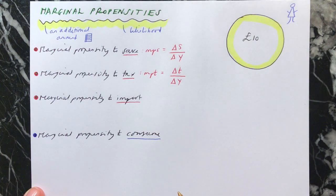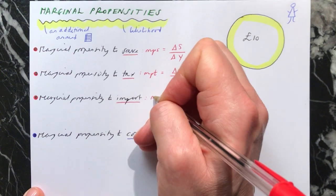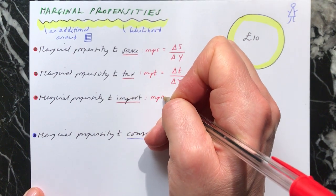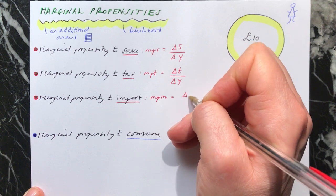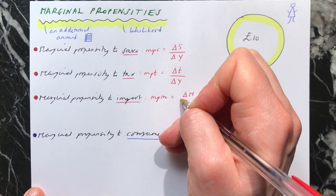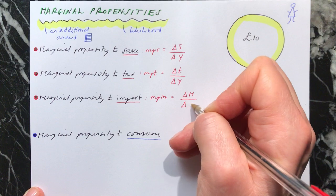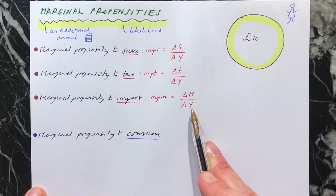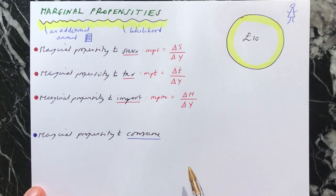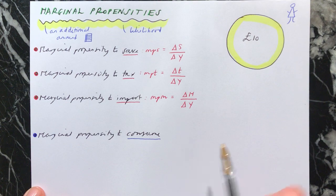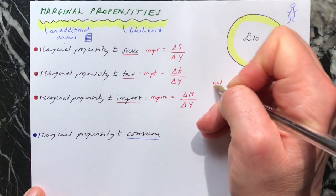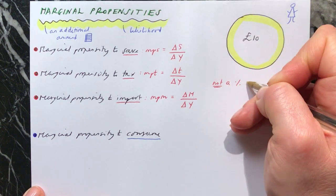Because remember, you're being given £10 extra. So your income is going up by £10. The marginal propensity to import, little m, is your change in spending on imports divided by your change in income. So how much of your new income are you spending on imports? And these are each looking at changes.